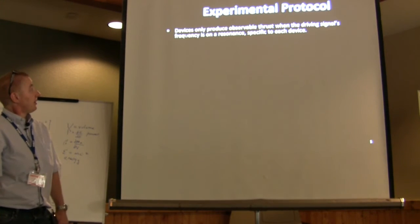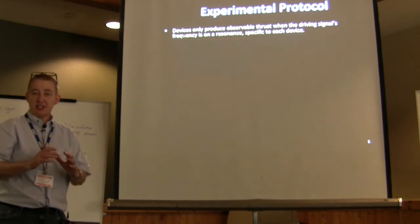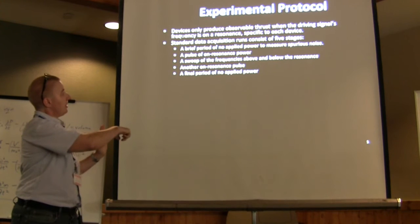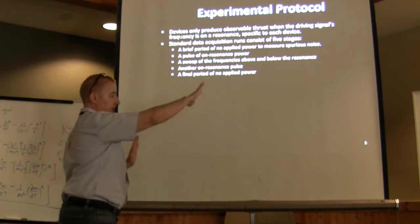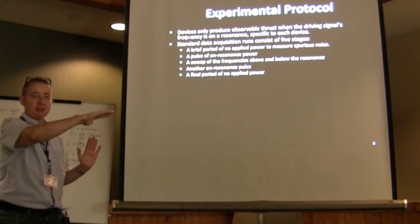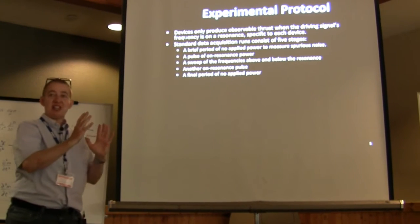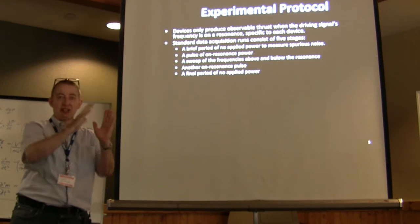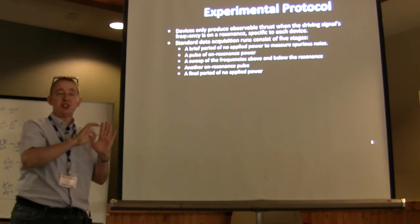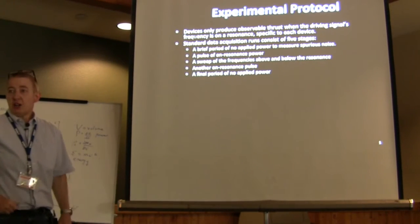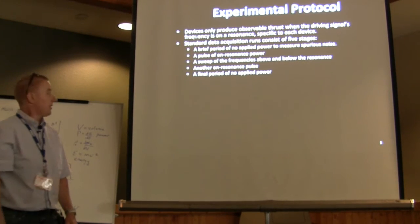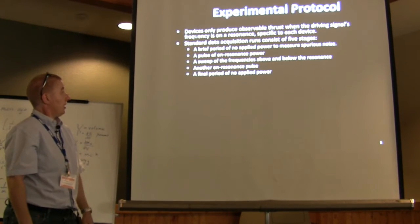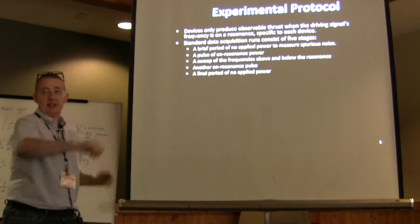The device produces observable thrust when the signal is on frequency at a resonance specific to each device. Standard data acquisition runs consist of five stages: a brief period of quiet, then a pulse on the resonant frequency, then a frequency sweep — about 15 kHz below through to 15 kHz above resonance — to verify we're maintaining resonance as the device heats up. Then a third pulse sweep, a second pulse on resonance, and a final period of no power.